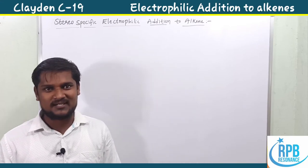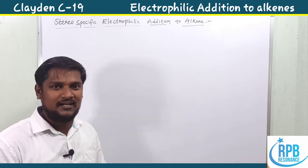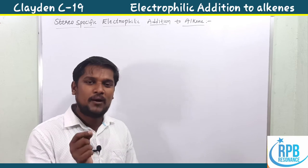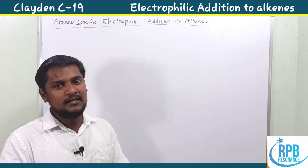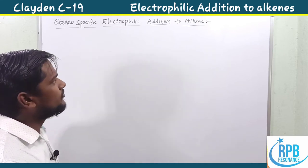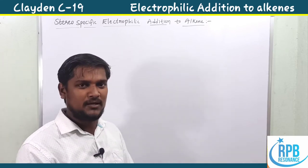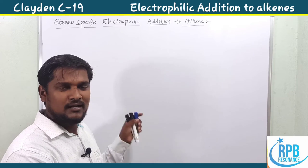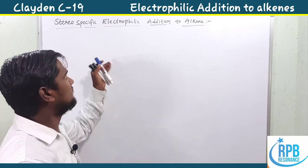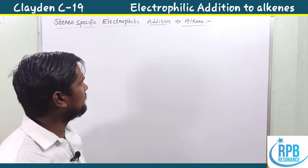Hi everyone, welcome to RPP Resonance Chemistry. Let's continue our lectures on organic chemistry, the Clident series of videos. In this session we are discussing part four of chapter 19, which covers stereospecific electrophilic addition to alkenes.